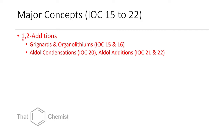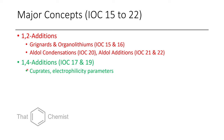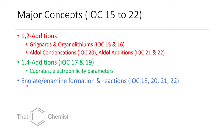In lectures 15 to 22, we talk about 1,2-additions, which includes the addition of Grignard reagents and organyllithiums to carbonyl compounds, as well as aldol condensations — the attack of an enolate at a carbonyl — and aldol additions, discussed in lectures 20, 21, and 22. We then talk about 1,4-additions, including carbon nucleophiles and other nucleophiles, in lectures 17 and 19. Enolate and enamine formation from ketones, as well as their reactions, are covered in lectures 18, 20, 21, and 22.